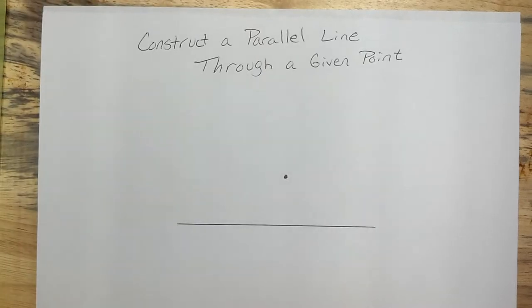To construct a parallel line through a given point, you need a line and a point not on that line. Obviously, if it's on the line, you're not going to have a parallel line.